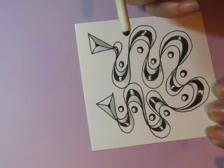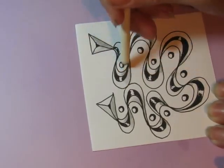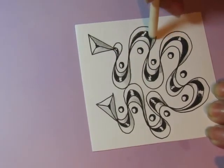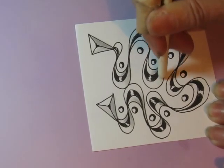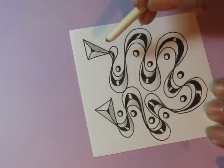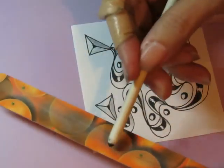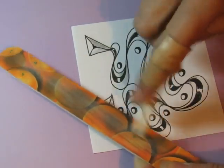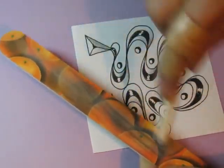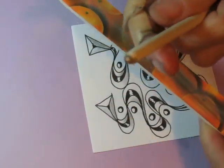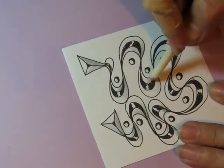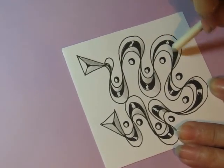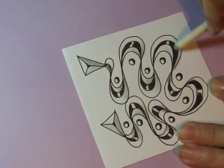Remember, if your blending stump gets so dark that it's putting out actually more graphite than you would like, you can clean it off by running it on a piece of emery board. Like this, just give it a little swirl on there. And that cleans off the tip. I don't know if you can see that, cleans off the tip pretty well. And then you can come back here and you have a little less, even more control over how much darkness you have.